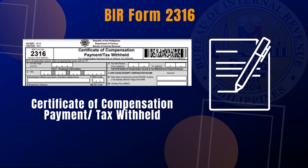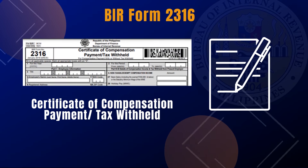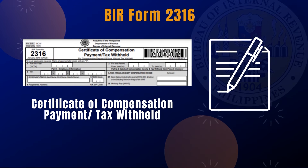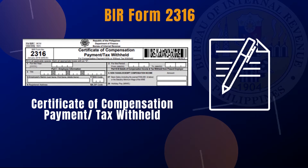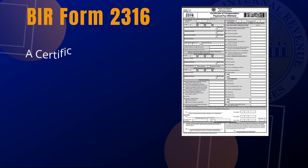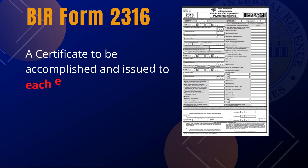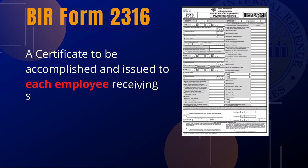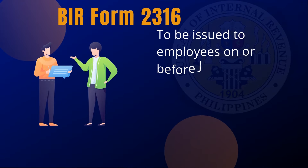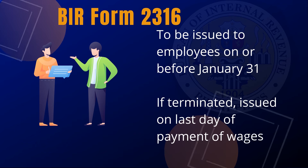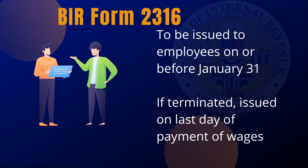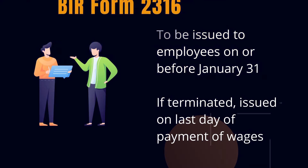Now let's discuss BIR Form 2316, also known as the Certificate of Compensation Payment or Income Tax Withheld. It is a yearly certificate that needs to be issued by the employer to its employees, issued to each employee receiving salaries and other forms of enumeration, indicating therein the total amount paid and the taxes withheld during the calendar year. This shall be issued to employees on or before January 31 of the succeeding year, or in case of termination of employment, issued on the same day the last payment of wages is made.